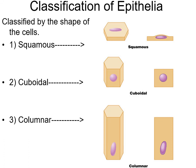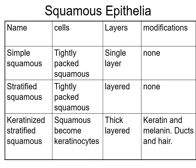The three basic shapes of epithelial cells are squamous, cuboidal, and columnar. Cuboidal doesn't always look like a cube - it kind of looks like a circle. Columnar cells are taller, and squamous cells are very thin and flat. On the classification chart you see across the top: the name, cells, layers, and modifications.